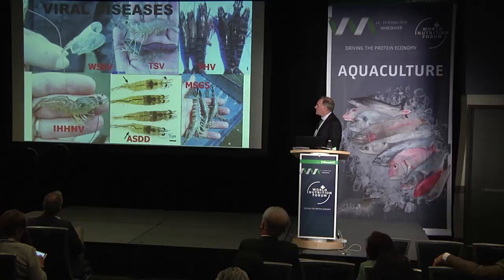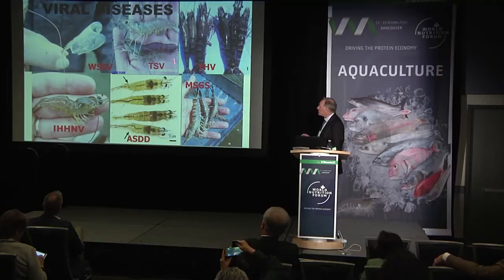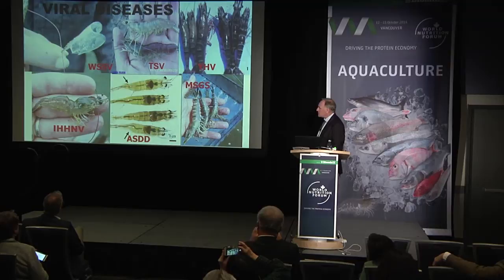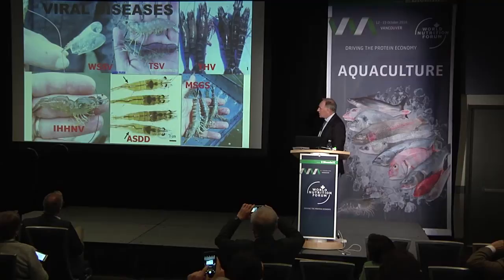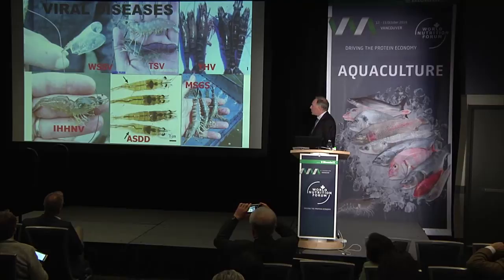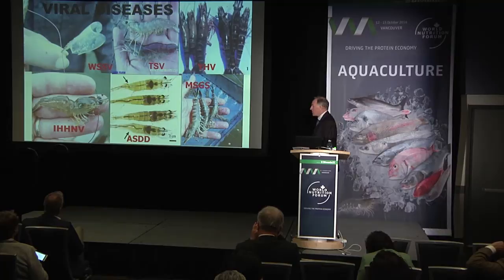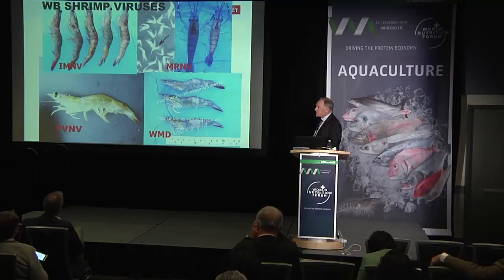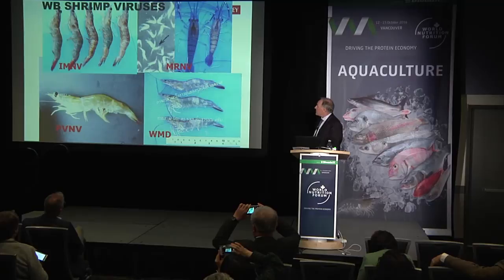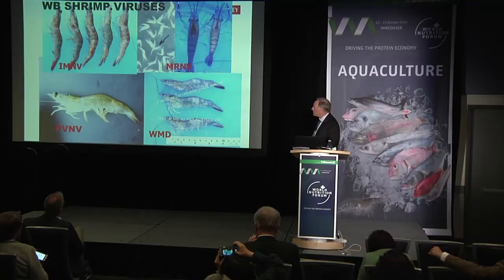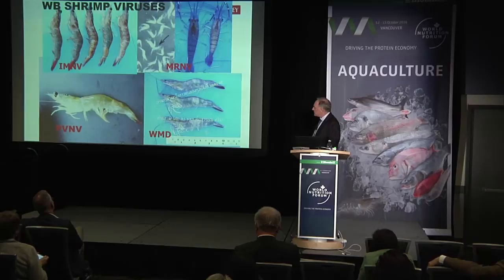Pictures of various viral problems include White Spot, which continues; Taura, not such an issue anymore; Yellowhead; IHHNV, which continues causing runting and slow growth; abdominal segment deformity disease, thought to be caused by a virus; and Monodon slow growth syndrome, which caused the transfer from Monodon to Vannamei in most of Asia. There are also white body shrimp viruses including IMNV originating in Brazil, Macrobrachium Rosenbergii nodovirus transferred into Vannamei, Penaeus Vannamei nodovirus, and white muscle disease.